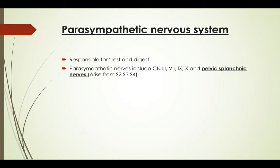The parasympathetic nervous system includes four main cranial nerves: number three, the oculomotor nerve; number seven, the facial nerve; number nine, the glossopharyngeal nerve; and number ten, the vagus nerve. It also includes the pelvic splanchnic nerves — this is asked many times, so you have to memorize it. The pelvic splanchnic nerves arise from S2, S3, and S4.